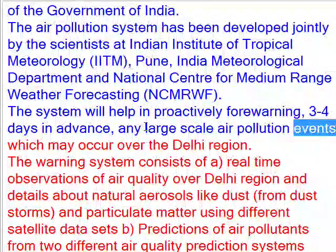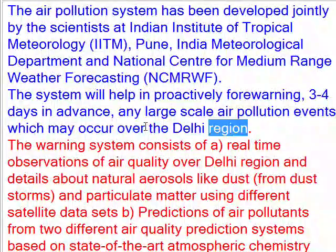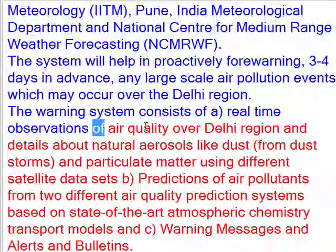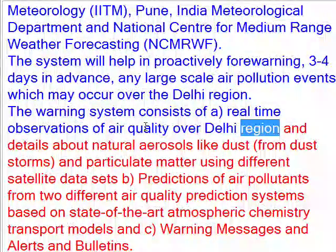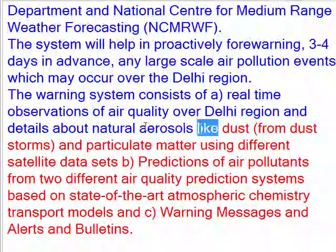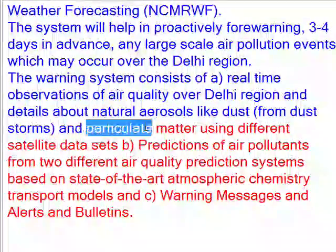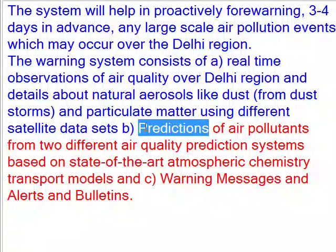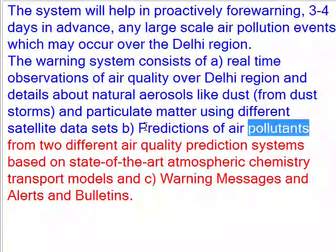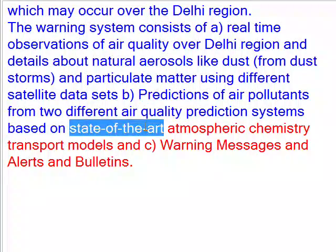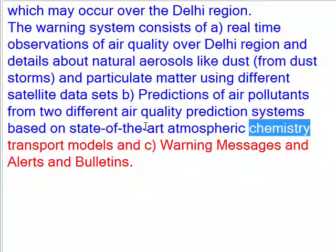The warning system consists of: real-time observations of air quality over the Delhi region, details about natural aerosols like dust from dust storms and particulate matter using different satellite datasets, and predictions of air pollutants from two different air quality prediction systems based on state-of-the-art atmospheric chemistry transport models.